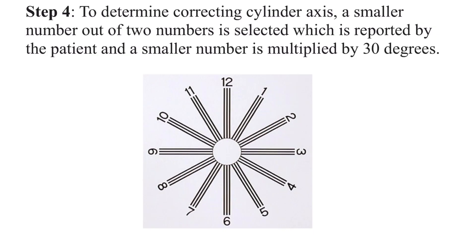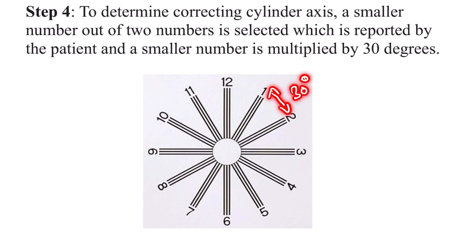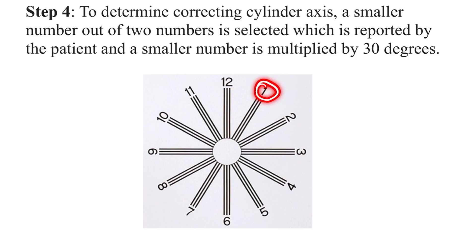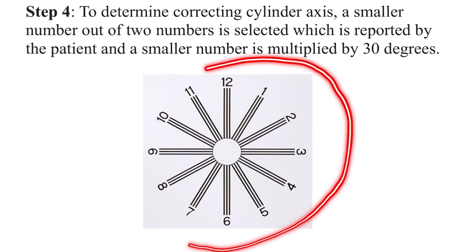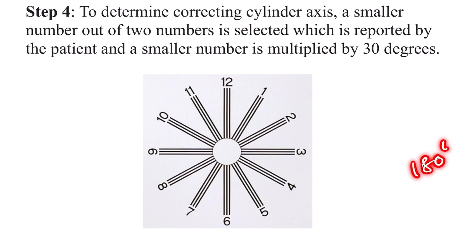The next step is to determine the correcting cylindrical axis. The smaller number out of the two numbers reported by the patient is selected and multiplied by 30 degrees. Since the patient preferred the 1 and 7 line, we select the smaller number, which is 1, and multiply it by 30 degrees to get the axis of the correcting cylinder. The reason for multiplying by 30 is that the difference between two numbers is 30 degrees. We select the smaller number because the clock dial chart represents axis in 360 degrees, whereas the cylindrical axis is always represented in 180 degrees.